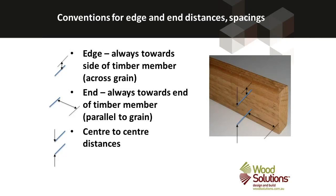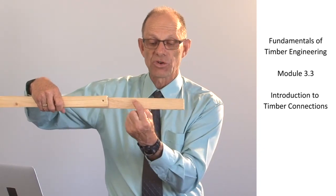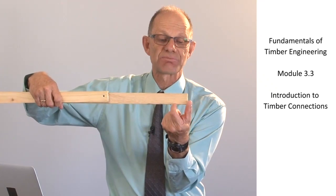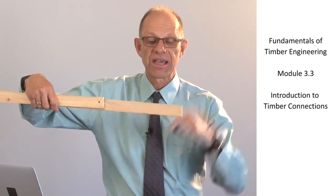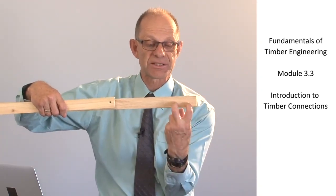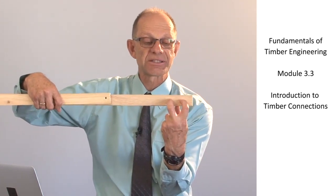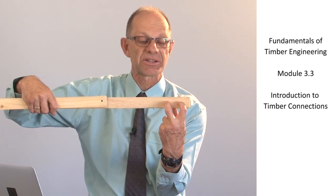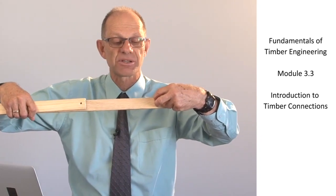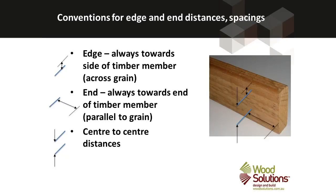Conventions relating to edge and end distances: the end of a piece of timber is where the grain points toward, so an end distance is always measured parallel to the grain. An edge distance is always measured perpendicular to the grain. Similarly for spacings: the distance between two connectors along the grain is a spacing parallel to the grain; the distance between two connectors across the grain is a spacing perpendicular to grain. For all edge distances, end distances, and spacings, it is the distance between the centres of the fasteners that we measure.